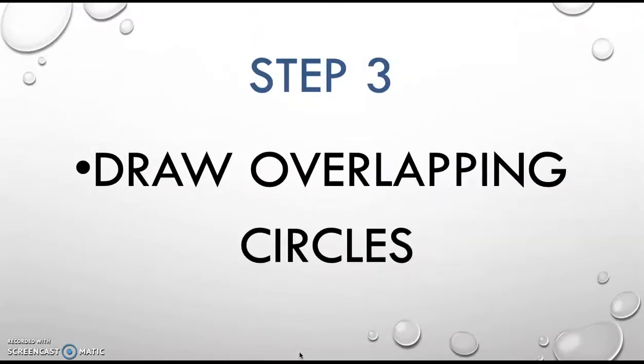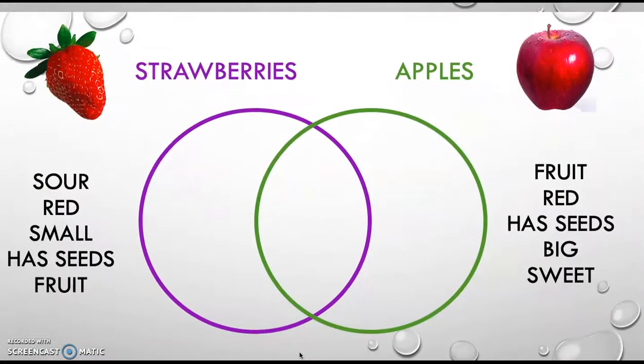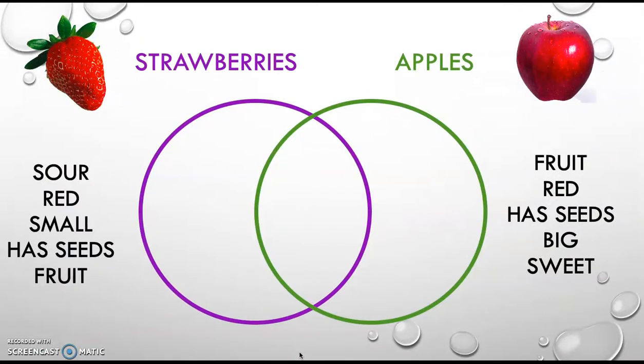Step three, you're gonna draw two overlapping circles. Look, here we have two circles. Purple one for strawberries and green for apples. Can you see them? They are overlapping.